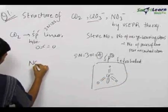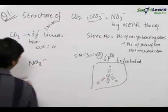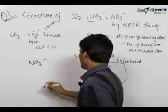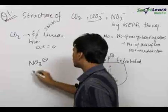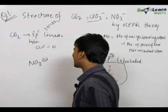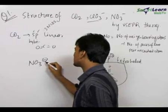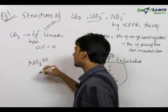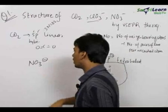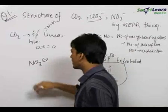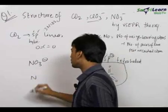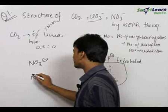Now let us take the case of the nitrate ion, NO3⁻. The negative charge is not on the central atom in this case, because the ion is formed from HNO3. Therefore, the negative charge is on one of the oxygen atoms. The number of electrons in the outermost shell of nitrogen is 5.